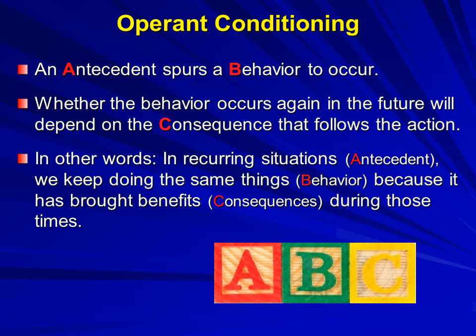We don't show other behaviors when an antecedent event — that spark for our actions — appears, because the behavior we tried once before didn't work well in that situation. Or the new action we tried out didn't bring any more benefits than the action we were already using, so why would we bother to switch? In most cases, to be tempted to engage in a new response when that antecedent happens, we would need to be convinced there's a very good chance of it bringing more benefits than our present response.